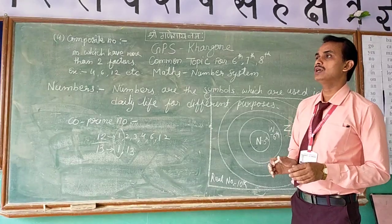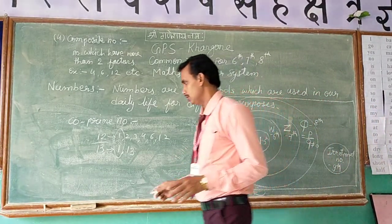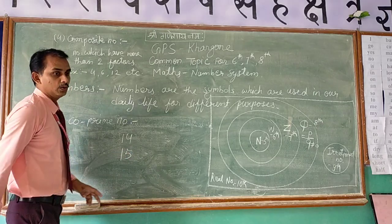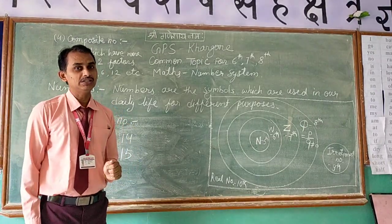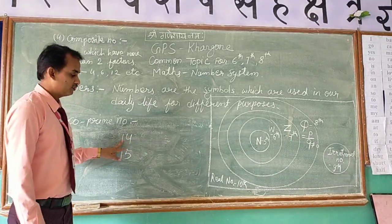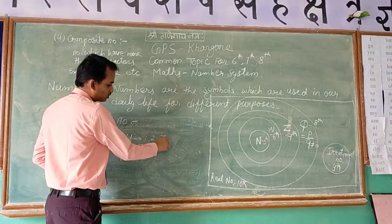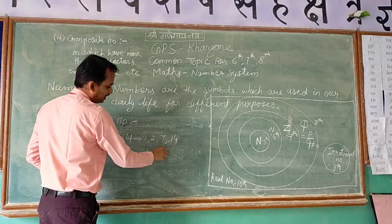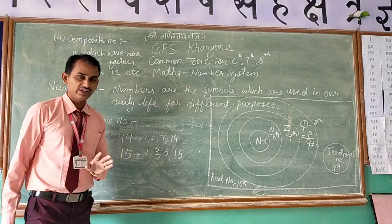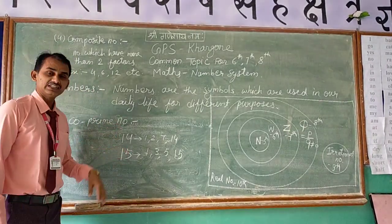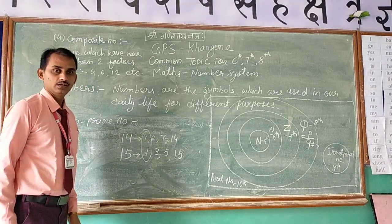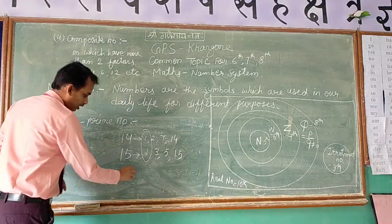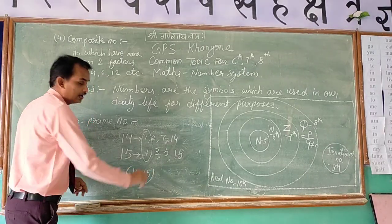Listen, students: co-prime numbers do not have any relation with prime numbers. Look at the factors of 14 and 15 — both are composite numbers. Factors of 14 are 1, 2, 7, and 14. Factors of 15 are 1, 3, 5, and 15. The only common factor is 1. So 14 and 15 are not prime numbers, but this group of 14 and 15 is co-prime. Co-prime means two numbers which have only one common factor, that is 1.